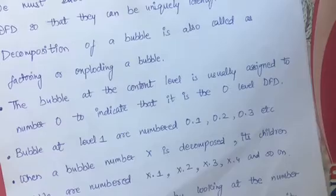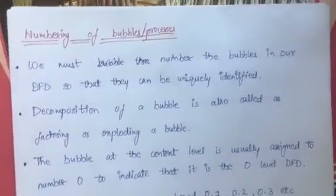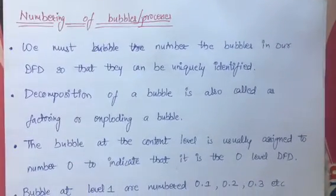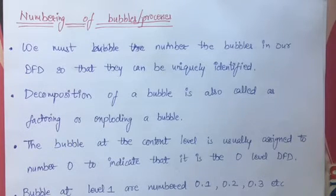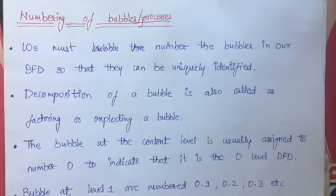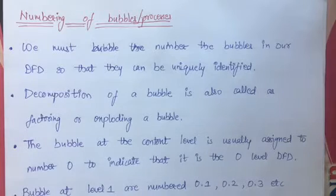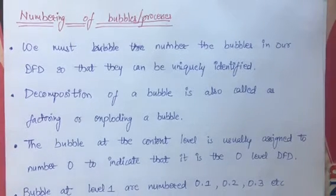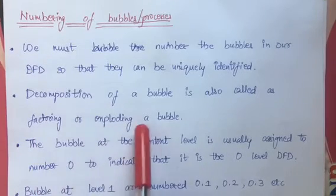Next is numbering the process. We number the process so we can uniquely identify it — identifying the process and the level of the process. We need numbering the process. When we decompose the process, we divide all the processes — we can call this factoring or exploding a bubble.